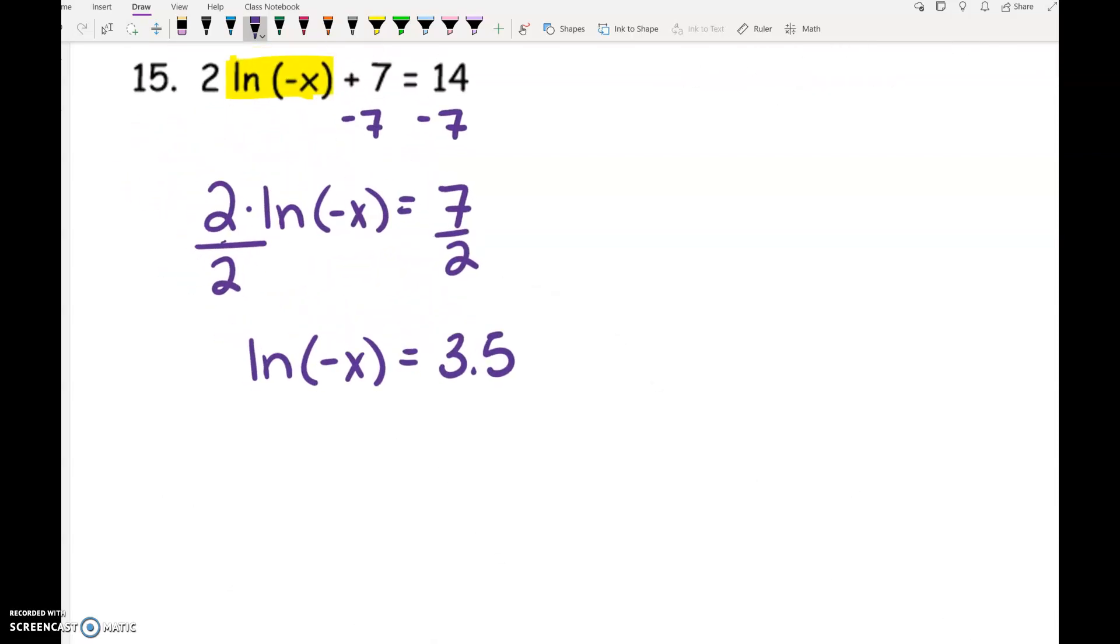So what base is LN? E. So you can either rewrite it log base E, or you can just stick a little E in there. So when we do the log ride, E raised to the 3.5 is going to equal negative x.